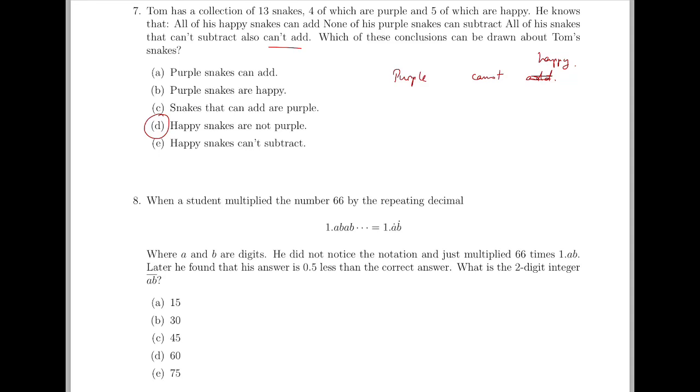Question 8. Now we let 1 point AB be 100 plus 10A plus B over 100. Using this number to multiply by 66, it's 0.5 less than the correct answer. So add this number by 0.5, and so we have 1 plus AB, the two-digit number AB, divided by 99.